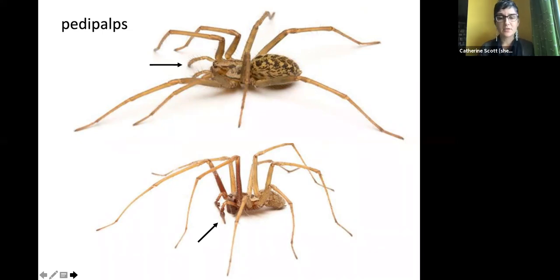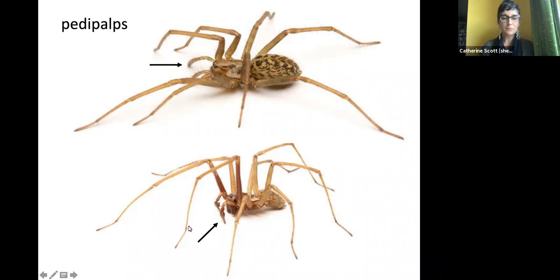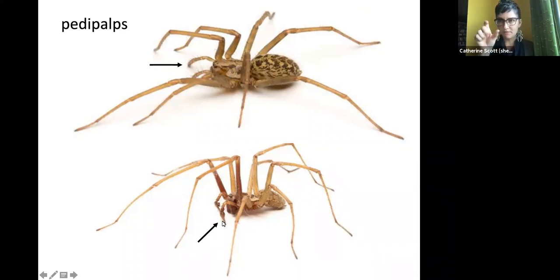We tell the difference between male and female spiders by looking at the pedipalps. In this slide we have a common house spider: on top is a female with slender pedipalps that look like miniature legs. On the bottom is a male — he has longer legs and a skinnier body — but the main difference is that his pedipalps are tipped with modified ends for transferring sperm. These are the copulatory organs of spiders.